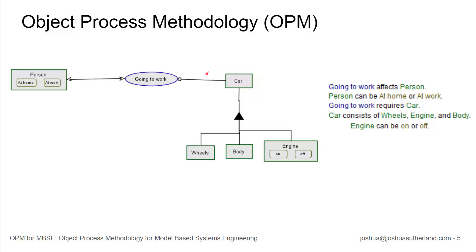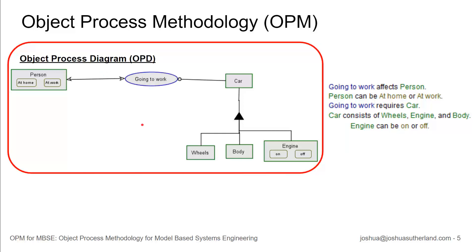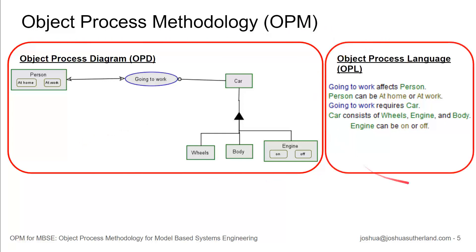And car is made up of these parts: wheels, body, engine. You can start to see that perhaps this is the item which is used by this process, and this is the object that is worked on by going to work. So you'll be right in that this is the diagram component of OPM, and here we have the language components. And both of these are representing the same information.